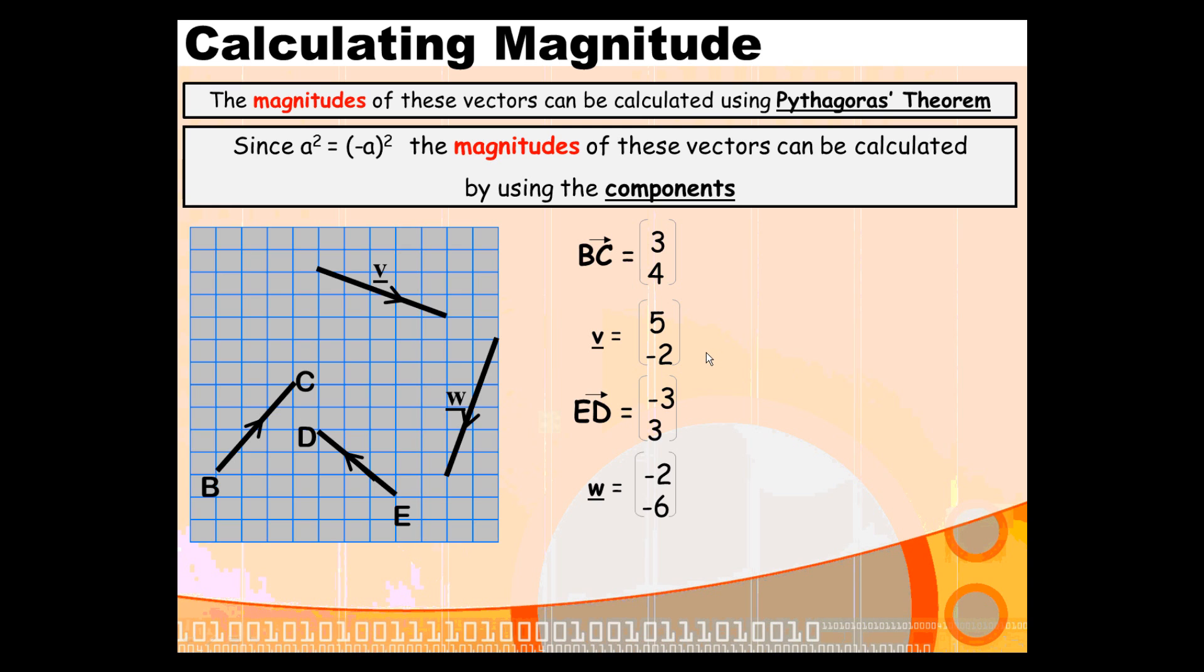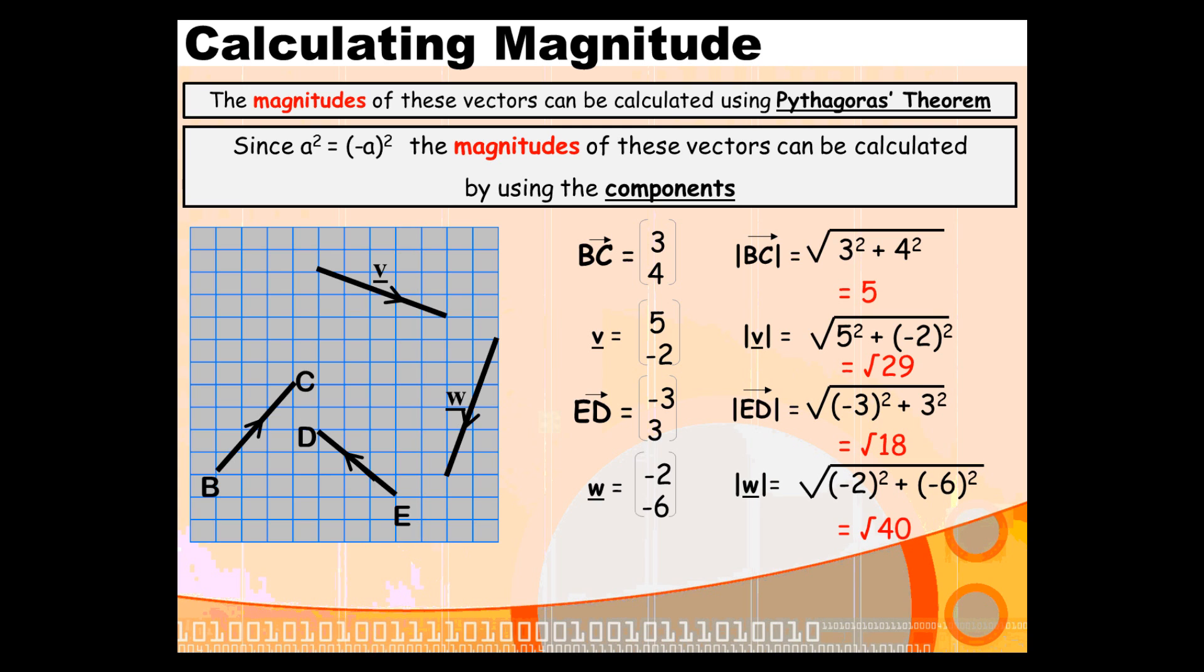If you want to find the length of the line going from B to C, you just use Pythagoras, where you have a side of 3 and another side of 4. So you square each of the components, add them up, and then square root the whole thing to get your magnitude. We can do a similar thing with each of our other components to find the magnitudes of the other three vectors. Just be careful to remember that a negative squared gives you a positive.